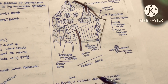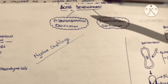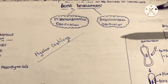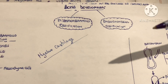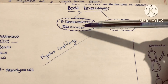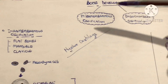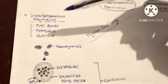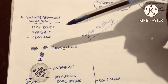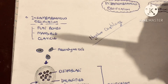That covers the microscopic difference between spongy bone and compact bone. Now let's move to bone development. How bones are formed — there are two ways: the first is intramembranous ossification and the second is endochondral ossification.